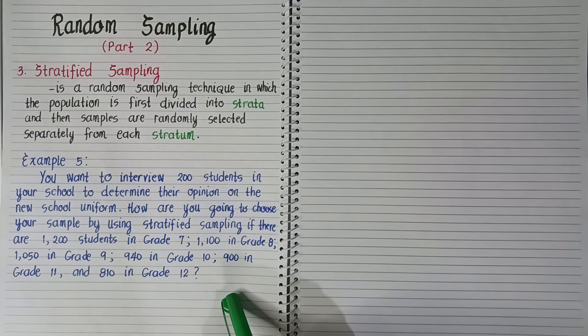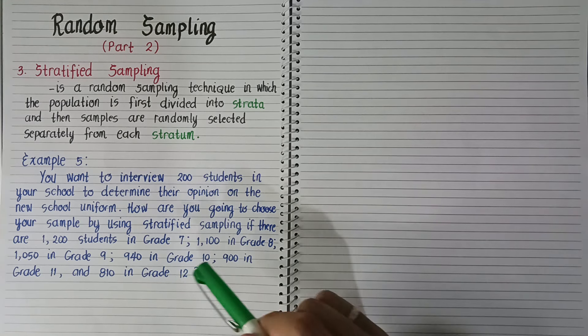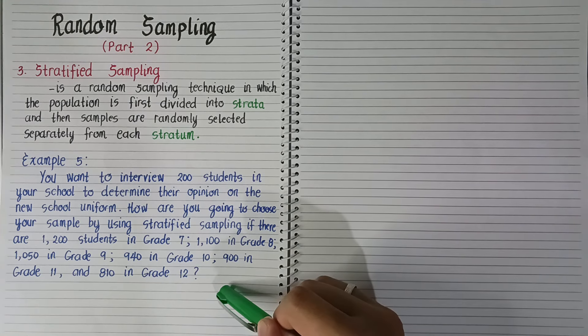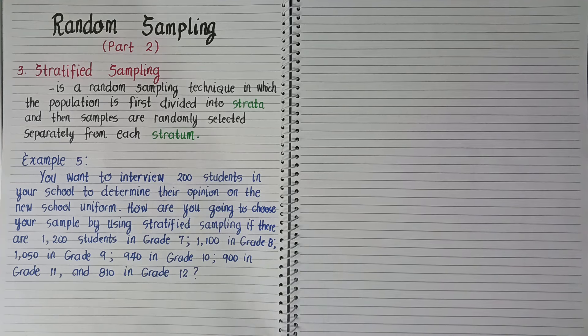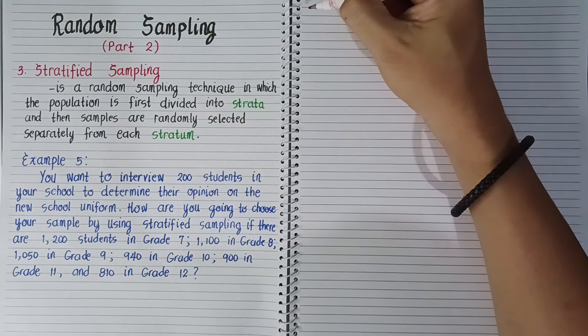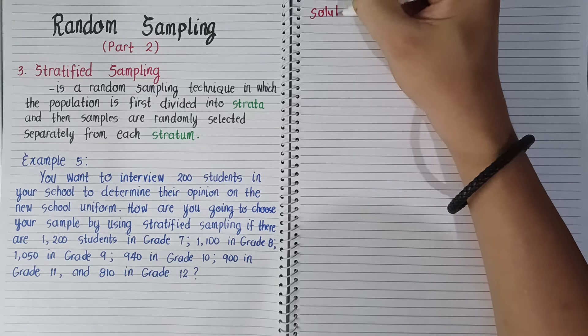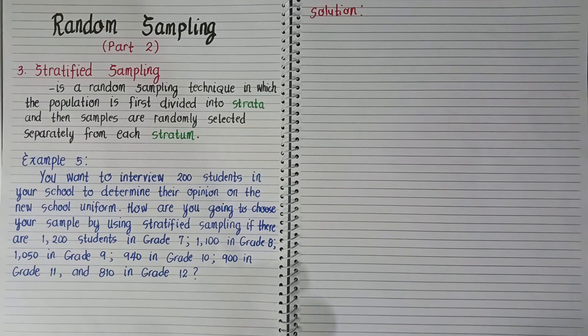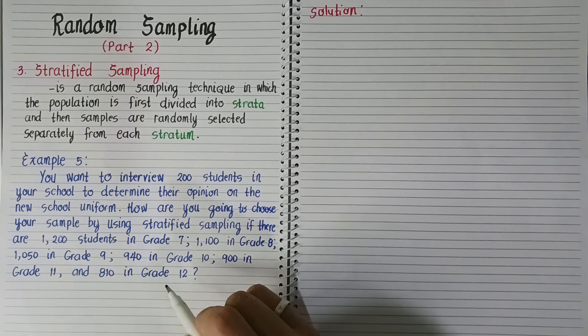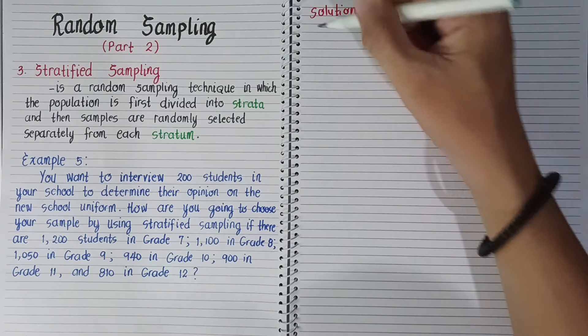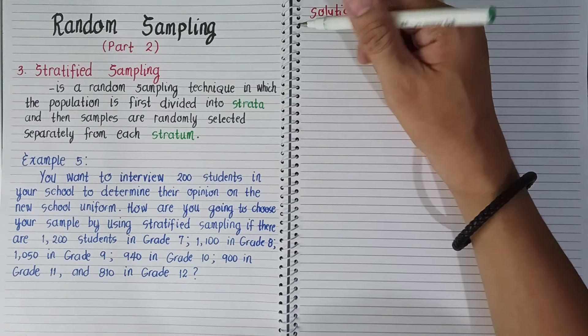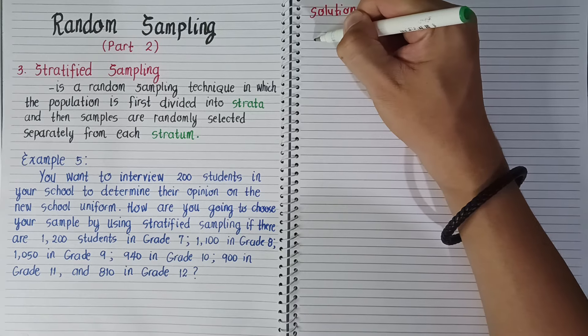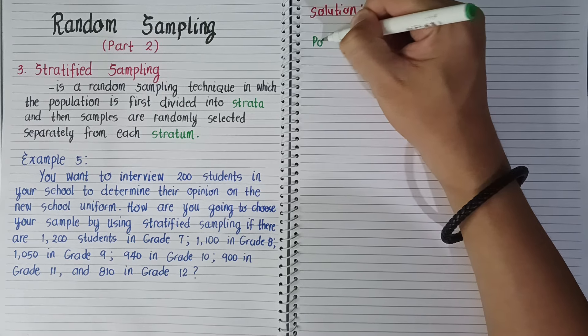How will we use stratified sampling for this question? Let's show the step-by-step process. In our solution, we'll write each group, which is each grade level. We have population.